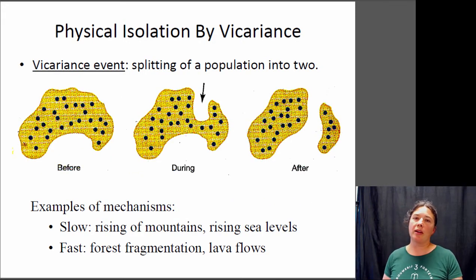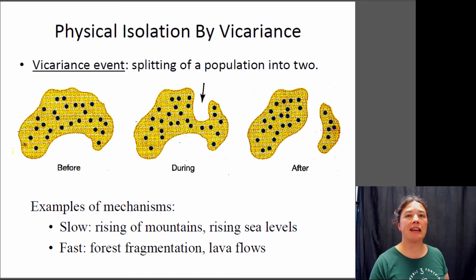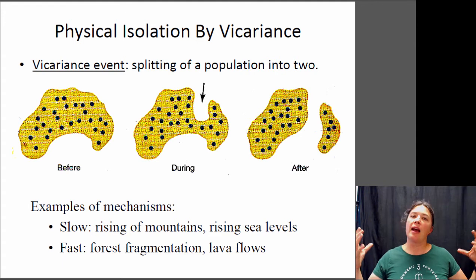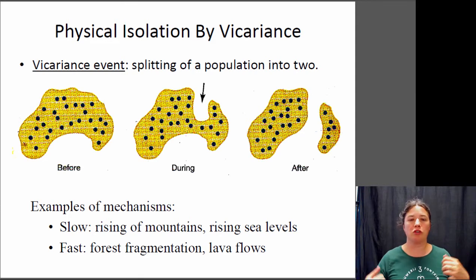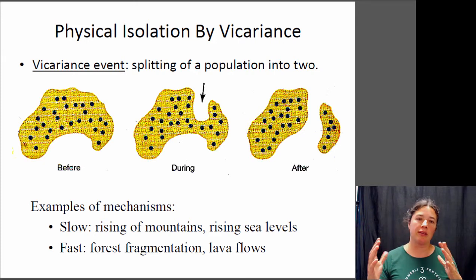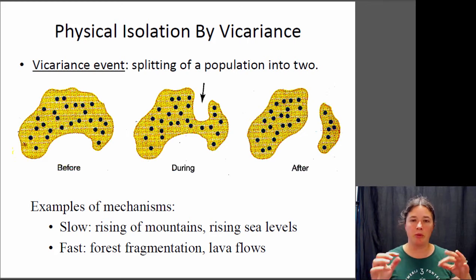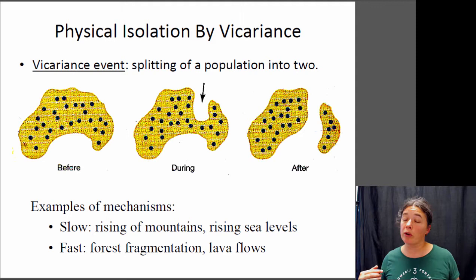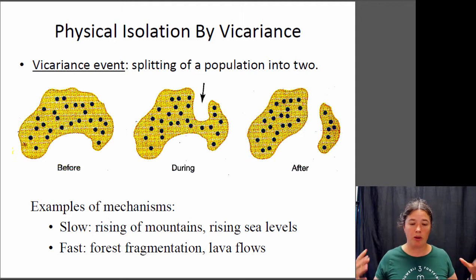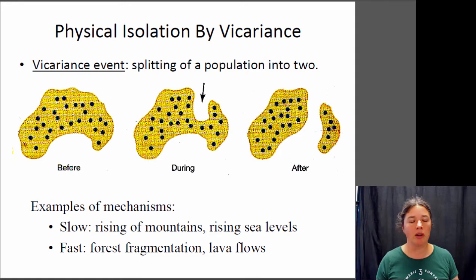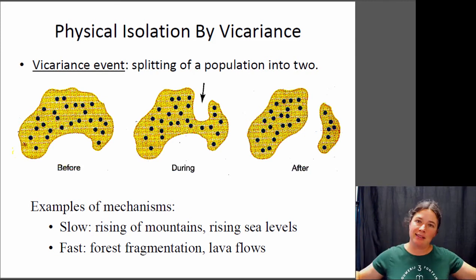One type of allopatric speciation is what we call vicariance. In vicariance, you have a large population and something occurs that basically breaks off a chunk of that population, splitting it into two parts. Things that can cause vicariance include mountain ranges being raised up, sea level change causing a body of water to split a population, forest fragmentation caused by humans cutting down forests, or lava flows in Hawaii that have isolated populations.